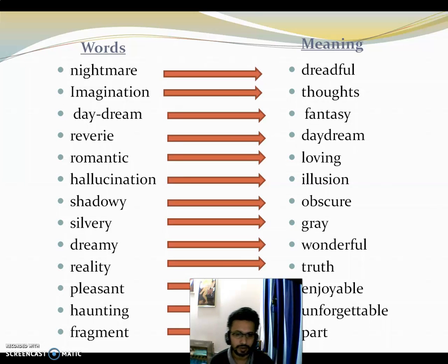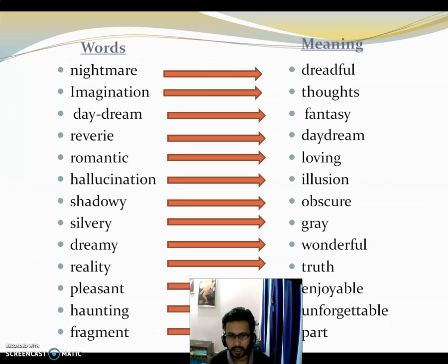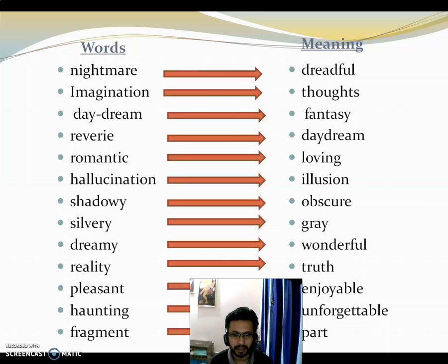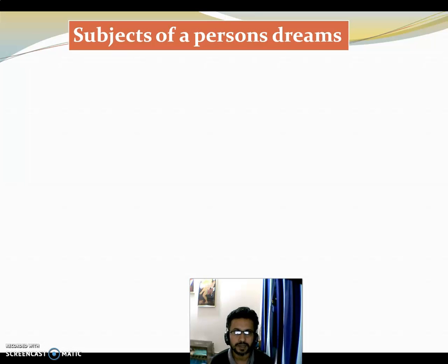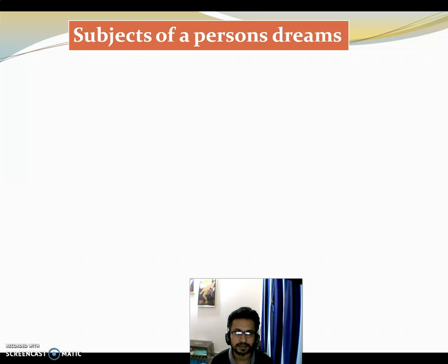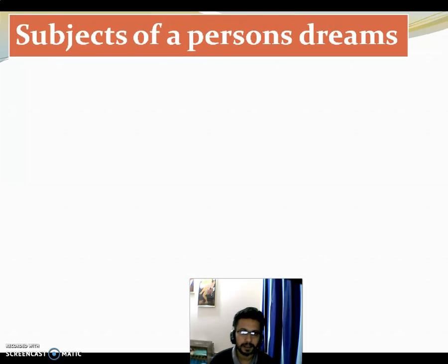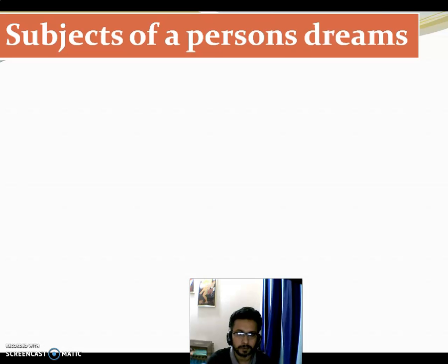Fragment means part. These are the important words whose meanings we need to know to understand the text well. Now, what might be the subjects of a person's dreams? Note: an apostrophe is missing in 'person's' — subject of a person's dreams.